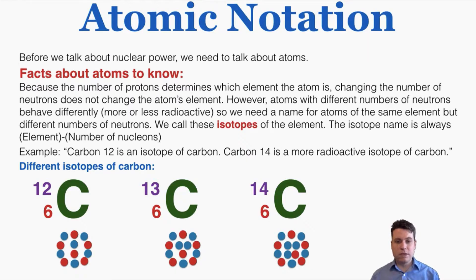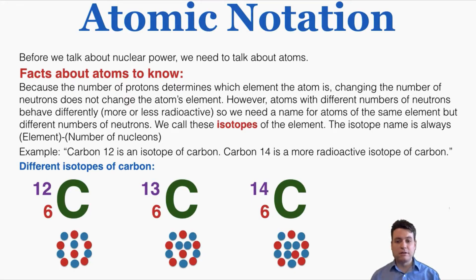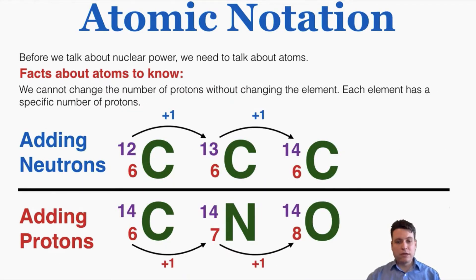Changing the number of nucleons makes the element more or less radioactive. I've drawn three examples of carbon: carbon-12, carbon-13, and carbon-14, with their nuclei shown below. Each nucleus has the same number of protons — because if it doesn't, it isn't carbon anymore — but different numbers of neutrons, since these are different isotopes. Adding neutrons changes the number of nucleons without changing the element, but adding protons changes the element itself.